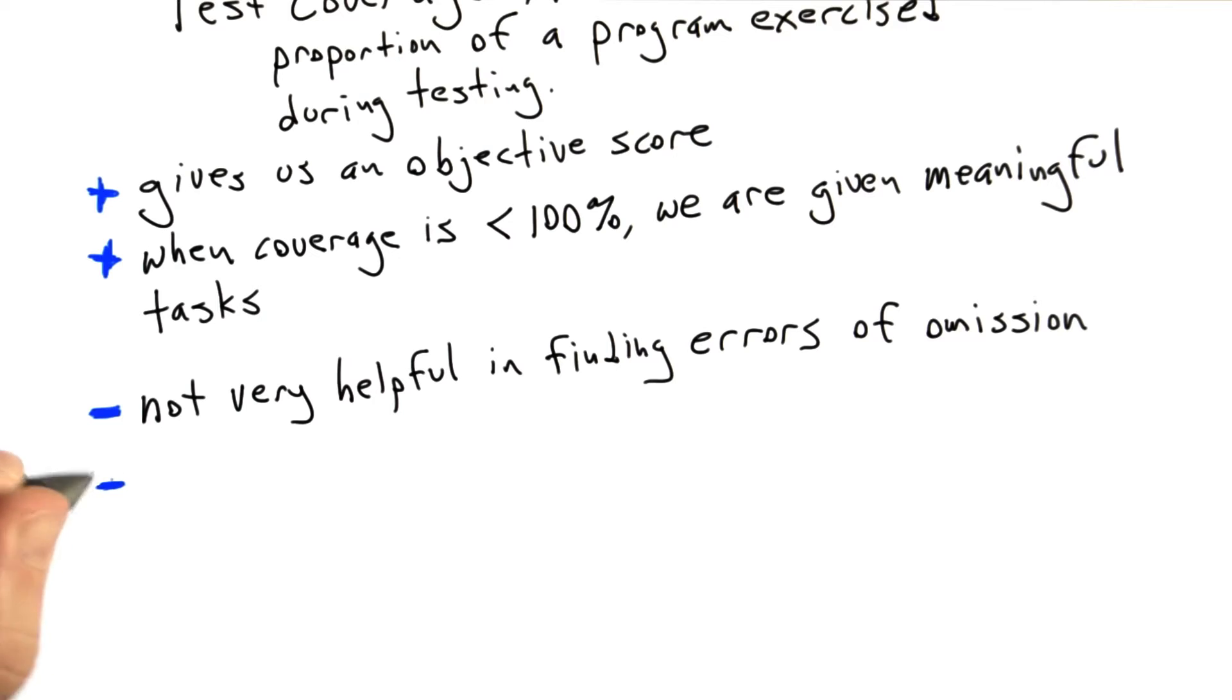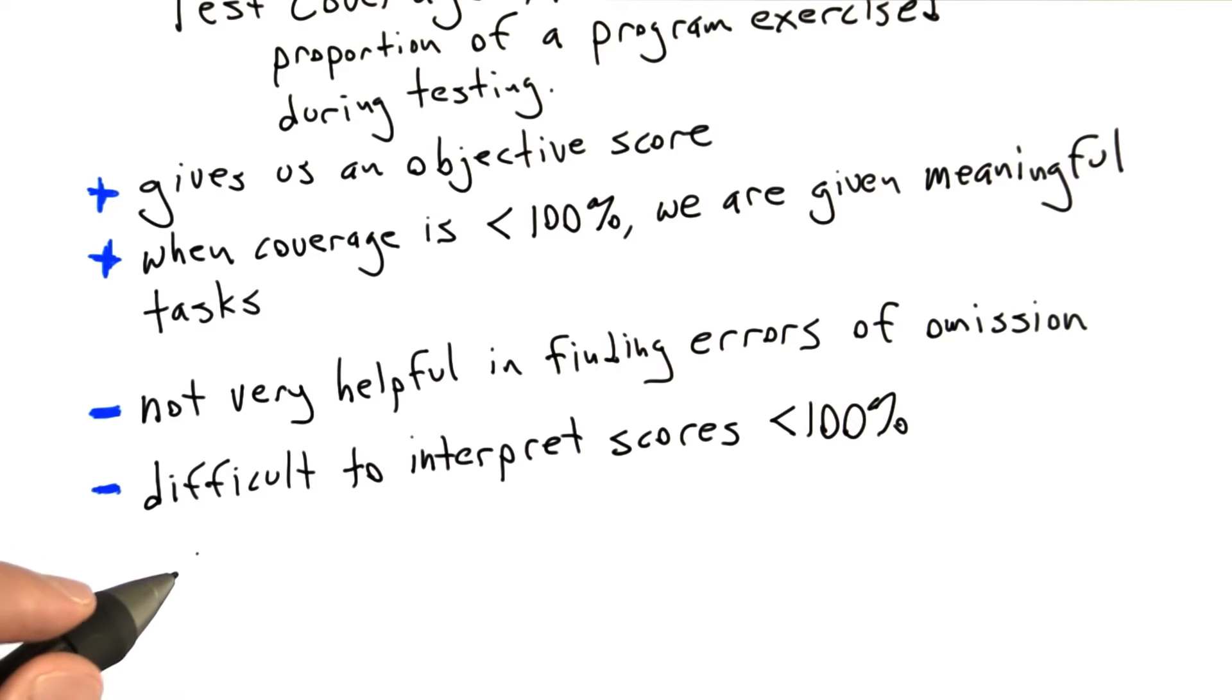The second drawback is it could be really hard to know what a test coverage score of less than 100% means. In safety-critical software development, what's sometimes done is requiring 100% test coverage over certain coverage metrics. That sort of removes this problem.